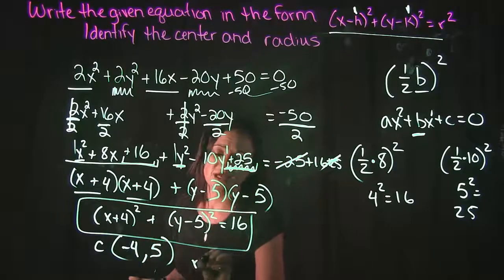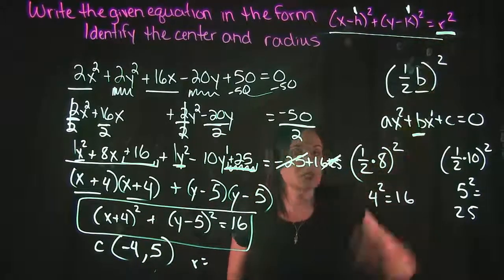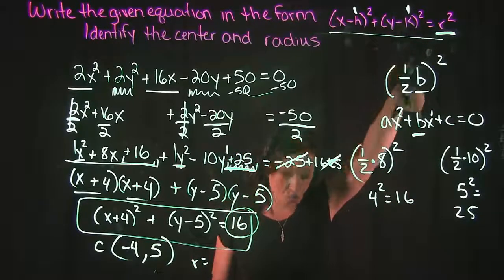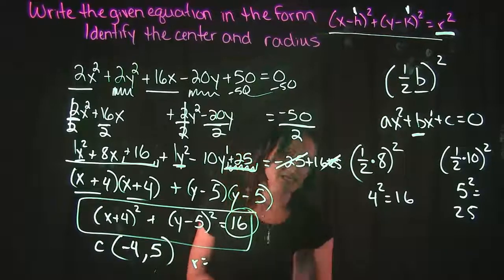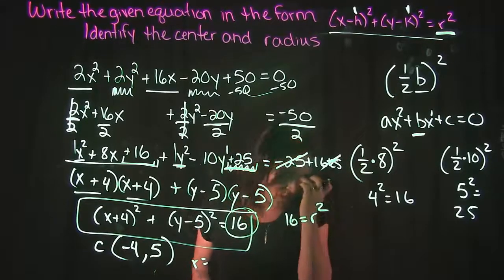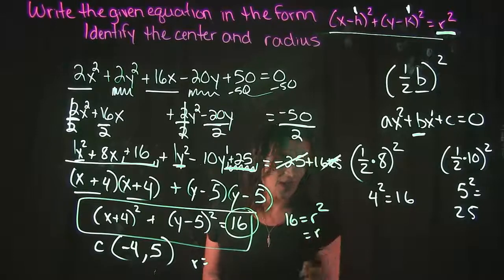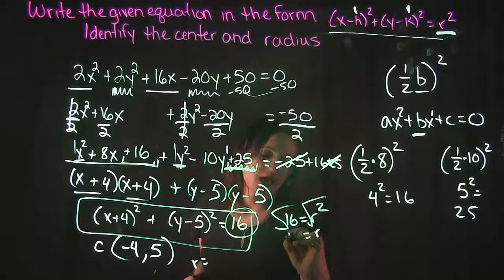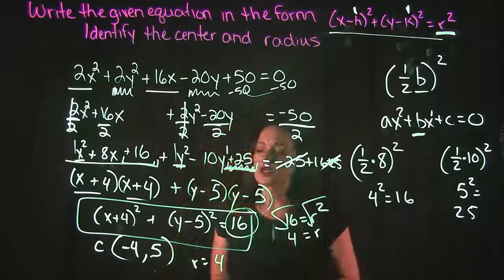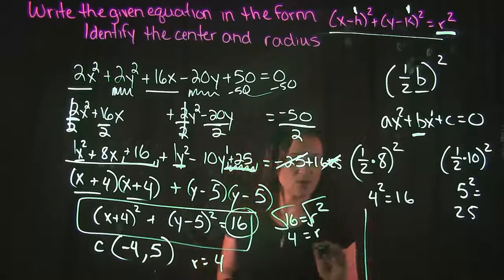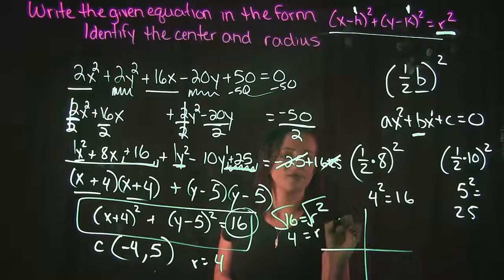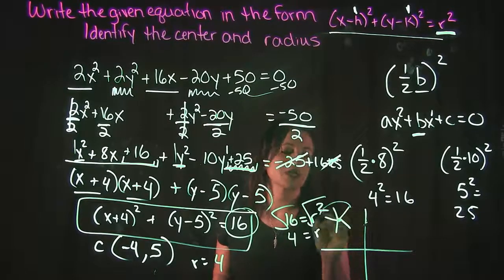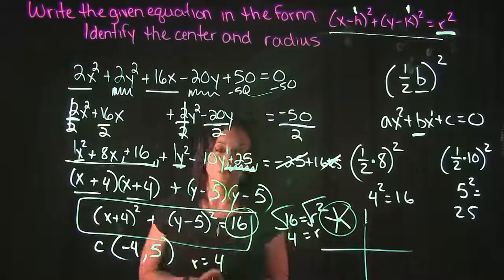Our radius, so notice this r right over here. This r signifies our radius. But this right here signifies r². If 16 is r², but we just want r, in order to just get r, we actually need to take the square root of both sides. And if we do that, we get 4. So what that means, that means that if we were to graph this real quickly, our center is (-4, 5). Our radius is going to go out 4 in each direction. And that's what our circle is going to look like.